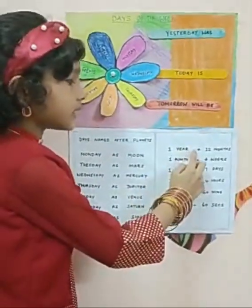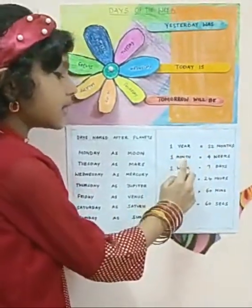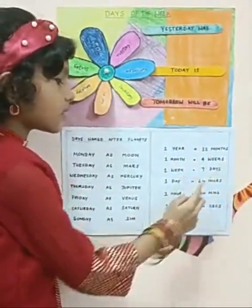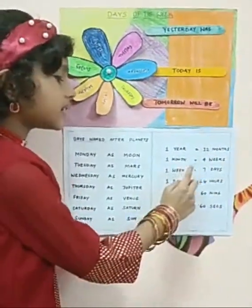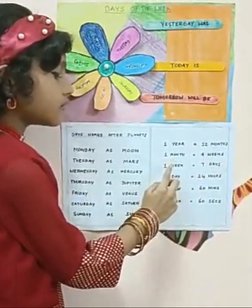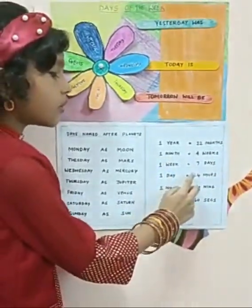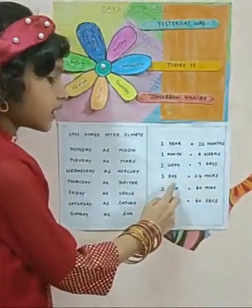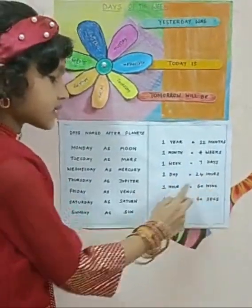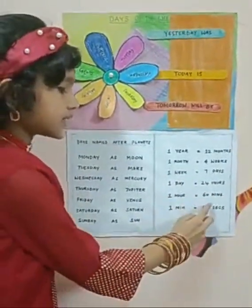One year equals 12 months. One month equals 4 weeks. One week equals 7 days. One day equals 24 hours. One hour equals 16 minutes. One minute equals 60 seconds.